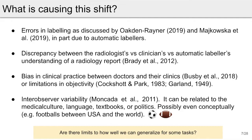So what could be causing this shift? Possibly errors in labeling due to automatic labelers, or discrepancy between radiologists, clinicians, and automatic labelers' understanding of the same radiology report. Or possibly biases in clinical practice such as anchoring, framing, or attribution bias. Or even possibly inter-observer variability, which would be similar to how a football classifier trained in the United States cannot possibly generalize to the rest of the world because these concepts are different from each other.